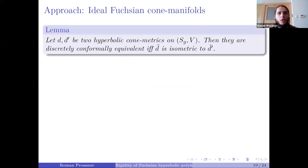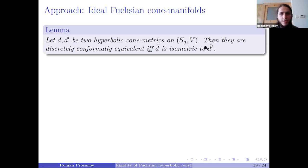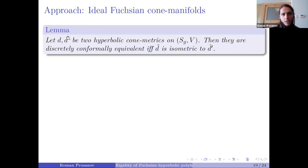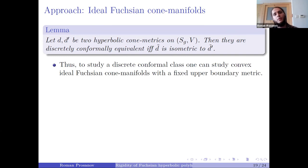A technical lemma states that if I have two hyperbolic con metrics and perform this construction, I obtain two hyperbolic cusp metrics. The lemma states that my two initial metrics were discretely conformally equivalent if and only if the obtained hyperbolic cusp metrics are canonically isometric to each other. Thus, to study a discrete conformal class one can study convex ideal Fuchsian cone manifolds with a fixed upper boundary metric.